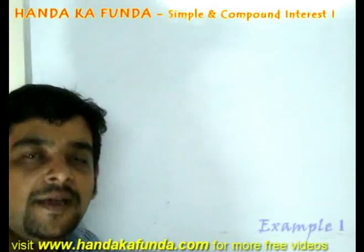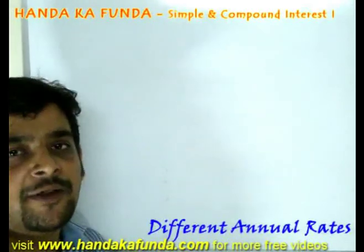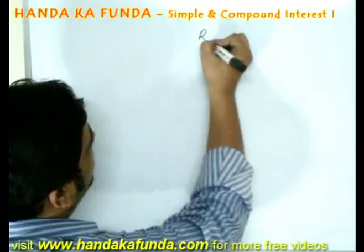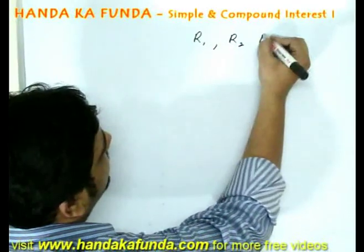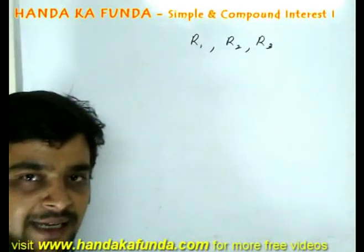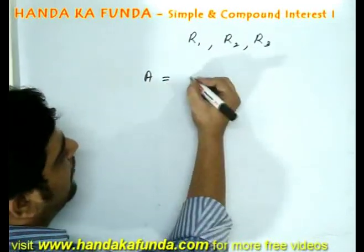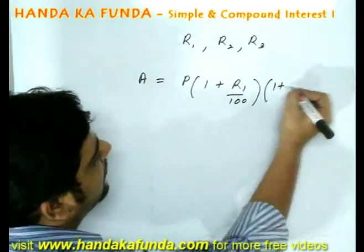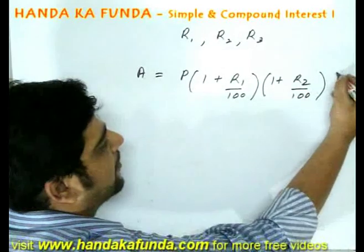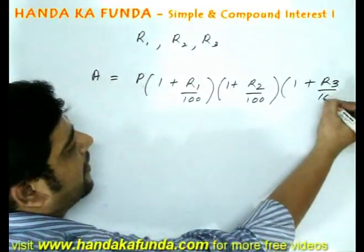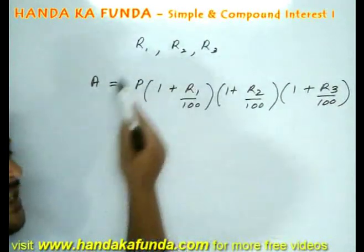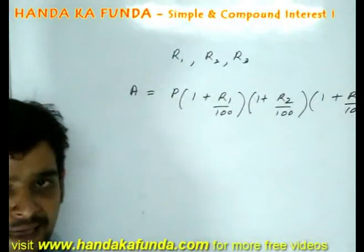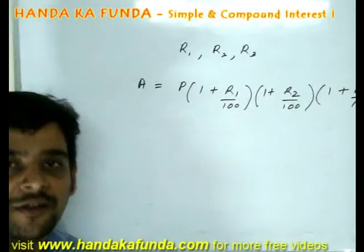What will be the amount if the rates of interest are different over the years? Let us say for the first year the rate is r1, for the second year the rate is r2, and for the third year the rate is r3. In this case, the amount under compound interest will be P × (1 + r1/100) × (1 + r2/100) × (1 + r3/100). As you must have realized, if you change the order of the rates, it is not going to matter — the final amount will be the same irrespective of the order of the rates of interest.